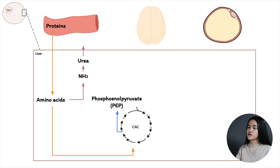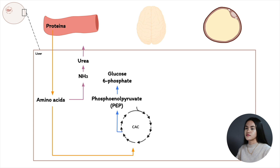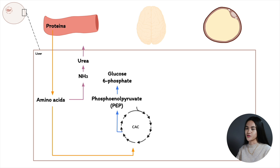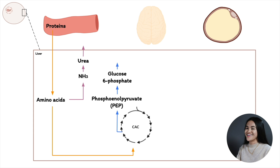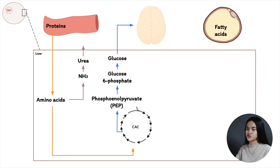Carbon skeletons enter the citric acid cycle, and oxaloacetate is used in gluconeogenesis to produce glucose. For a refresher on this pathway, the gluconeogenesis lecture covers it in detail. Glucose is then exported to the blood and to the brain and other extrahepatic tissues.